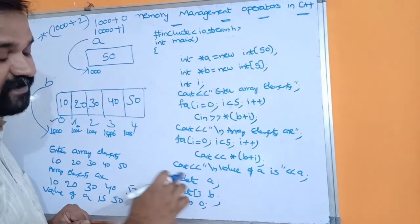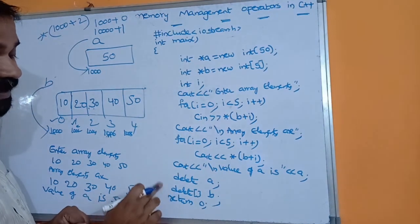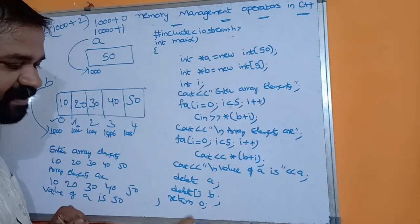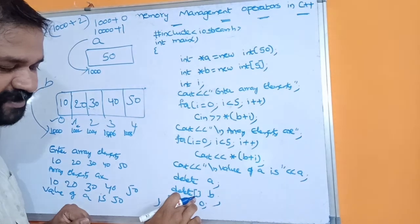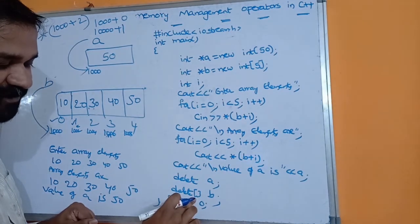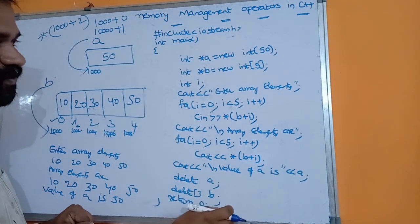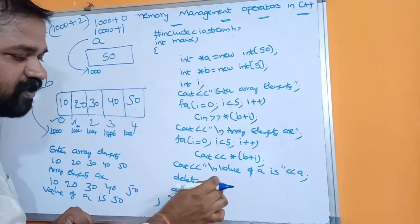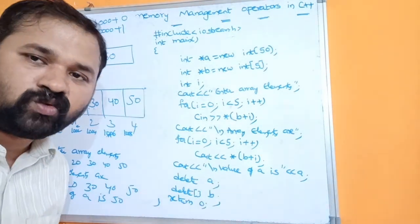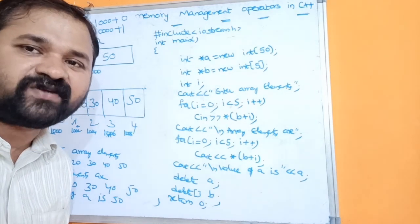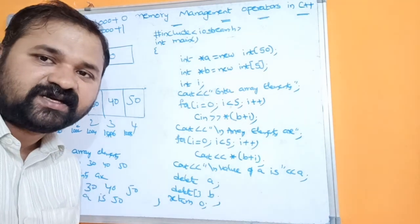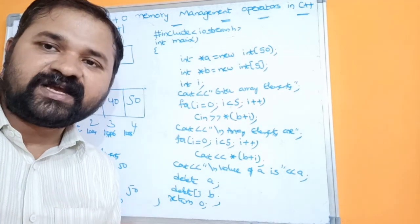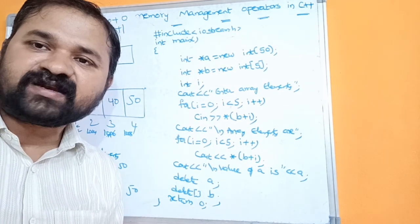Then we release memory for a using delete a, and destroy memory for b using delete b (or delete []b since b is an array variable). Now we can use that memory for storing other variables. This concludes the topic of memory management operators — new and delete operators — in C++ programming.